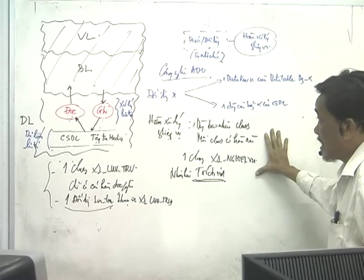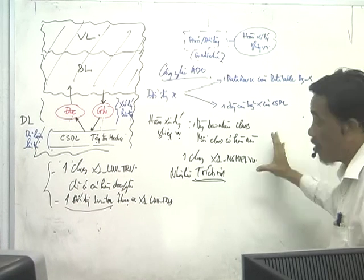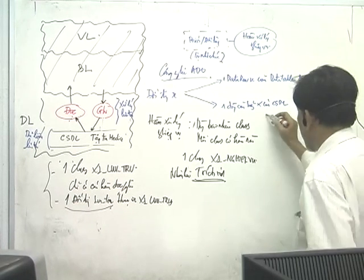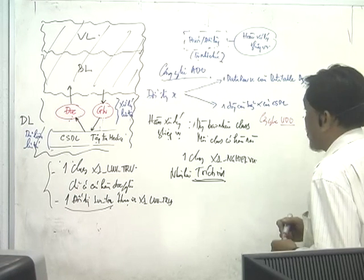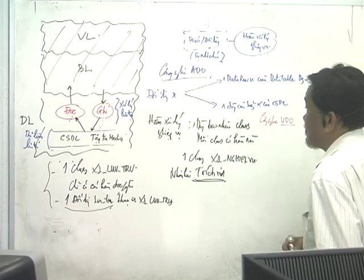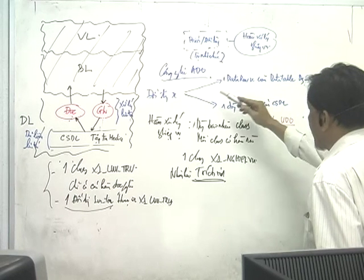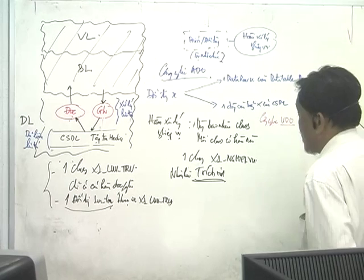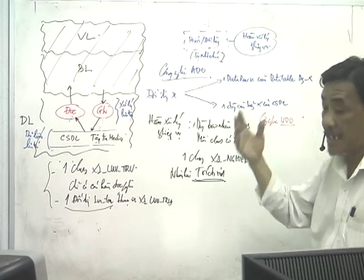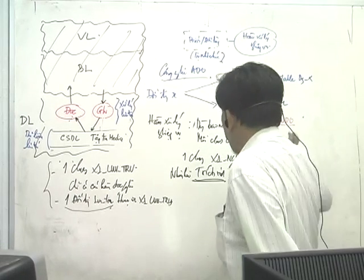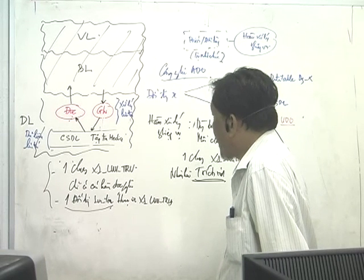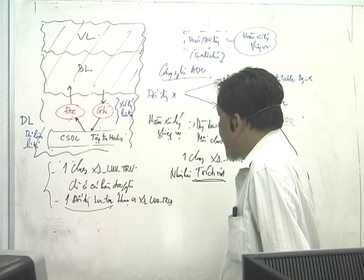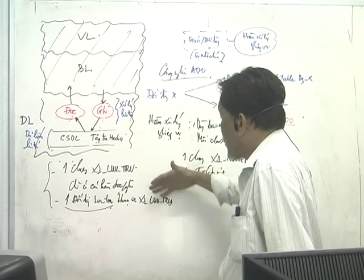Để chuẩn bị cho chương sau, chúng ta sẽ học công nghệ gọi là UDO - User Defined Object, tức là đối tượng tự định nghĩa. Khi đó một đối tượng không biểu diễn bằng DataRow nữa - đối tượng X sẽ có một Class X tương ứng. Đây là lập trình hướng đối tượng nghiêm chỉnh. Trước khi qua đó, tôi sẽ ôn lại phần này cho kỹ.